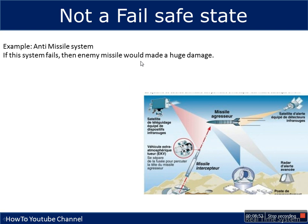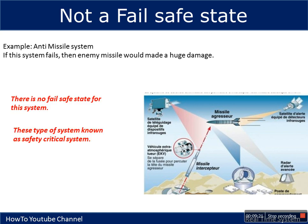But in the case of an anti-missile system, if the system fails it would result in a catastrophe — a huge damage. Once a missile is launched and there is any problem with the missile interceptor, the missile will be missed and the result will be devastating. So there is no fail-safe state for such systems. These types of systems are known as safety-critical systems — systems for which no fail-safe state exists.